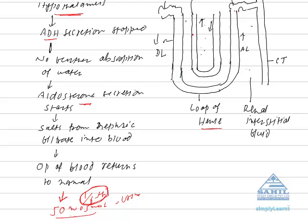The two limbs of the loop of Henle run parallel but in opposite directions — the descending limb goes below and the ascending limb of the vasa recta goes above. That is why this mechanism is called the counter-current mechanism. Counter-current mechanism is a mechanism in which two limbs lie parallel but the flow of current is opposite — urine flows in one direction and blood flows in the opposite direction.